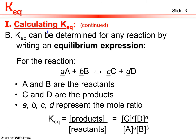KEQ is found by calculating what's called an equilibrium expression. For a generic reaction where substance A and B react to form C and D, with mole ratios represented by lowercase a, b, c, d, the equilibrium expression is the concentration of product C to the power of c, times product D to the power of d, divided by the concentration of reactant A to the power of a, times reactant B to the power of b. We use the mole ratio coefficients as exponents because each reactant decreases exponentially at a rate that depends on the number of moles.